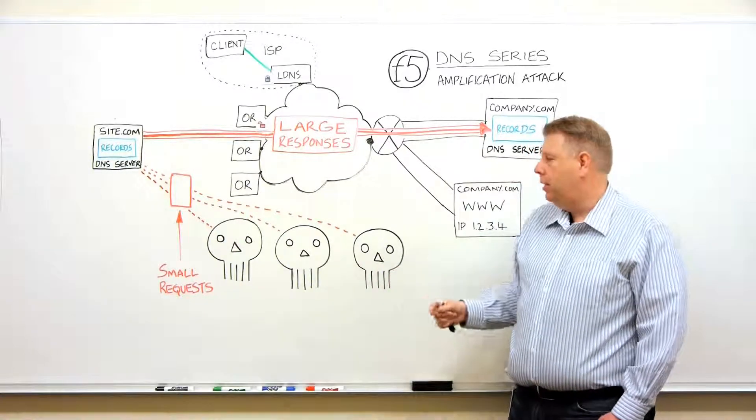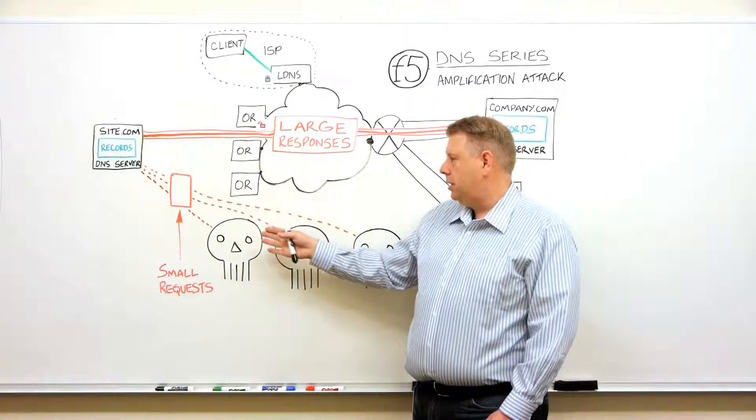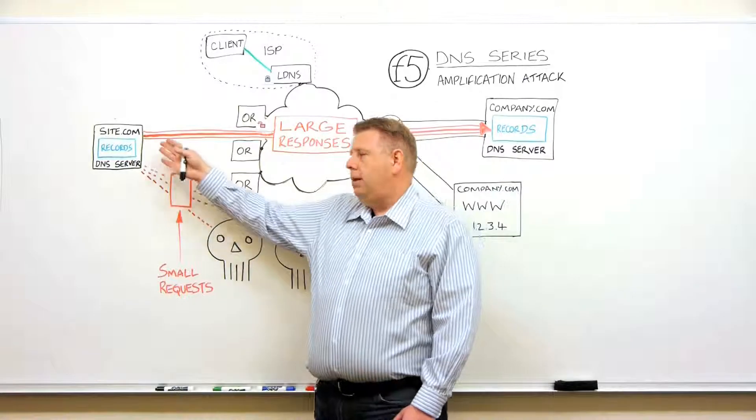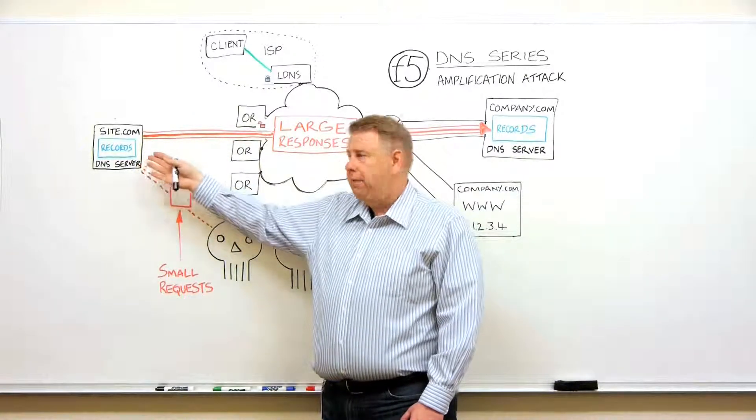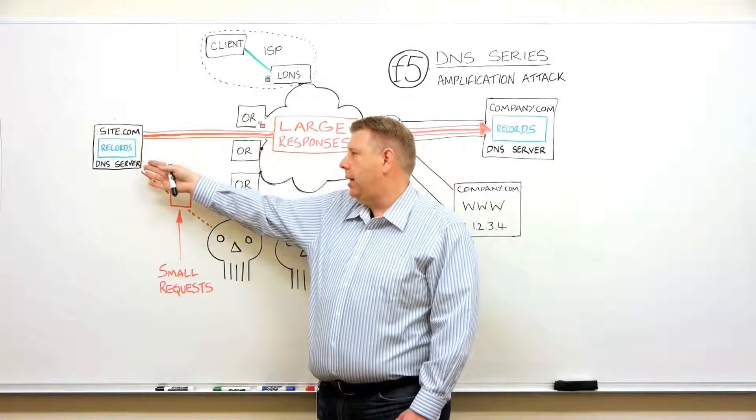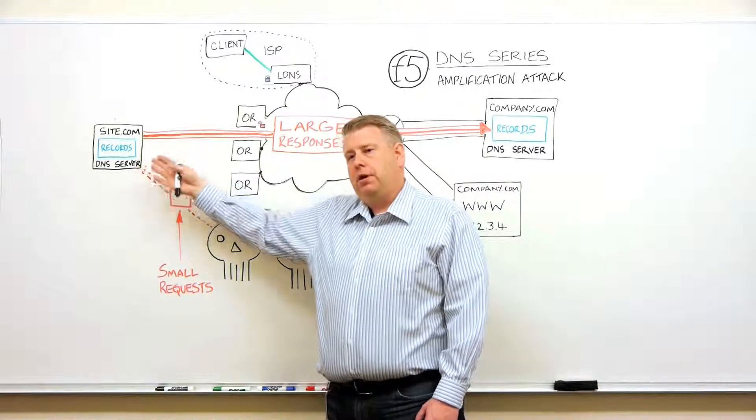And this is where it gets a little more clever. In this case, the attackers can say, give me the record for any. And if you use the any record type, it's sort of like asking for all the phone numbers on that page.